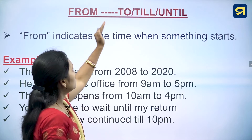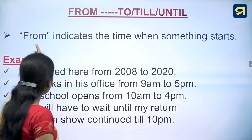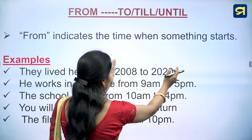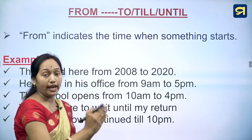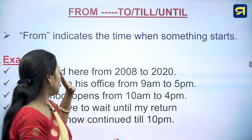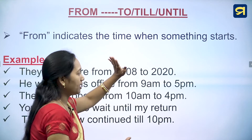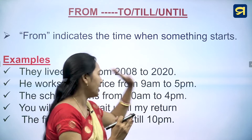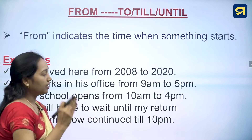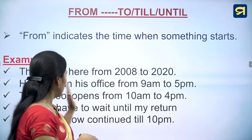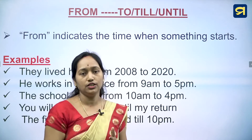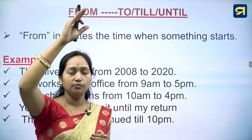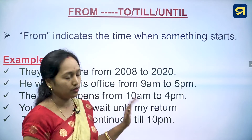Prepositions 'from', 'to', 'till', and 'until'. 'From' indicates the time when something starts. For example: they lived here from 2008 to 2020, he works in his office from 9 am to 5 pm, the school opens from 10 am to 4 pm. You will have to wait until my return. The film show continued till 10 pm — meaning up to the maximum time of 10 pm.